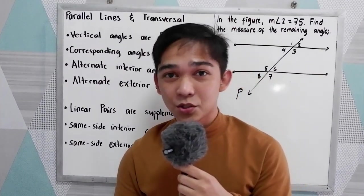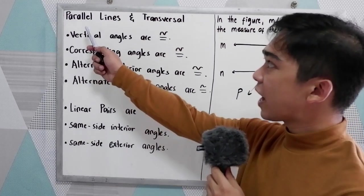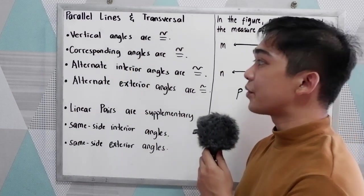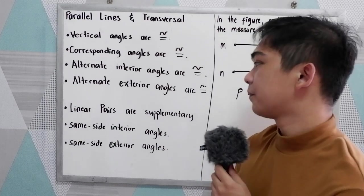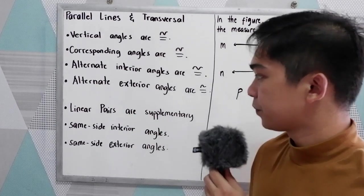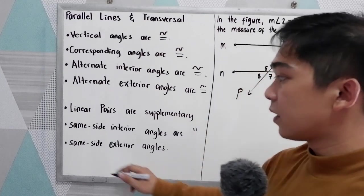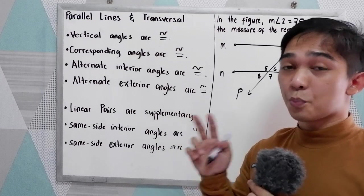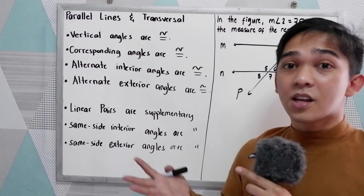Good day everyone. Today I will be discussing parallel lines cut by a transversal and the different definitions, postulates, and theorems. If you have a parallel line cut by a transversal: vertical angles are congruent, corresponding angles are congruent, alternate interior angles are congruent, alternate exterior angles are congruent, linear pairs are supplementary — meaning the sum of their measures equals 180 degrees — and same side exterior angles are also supplementary.